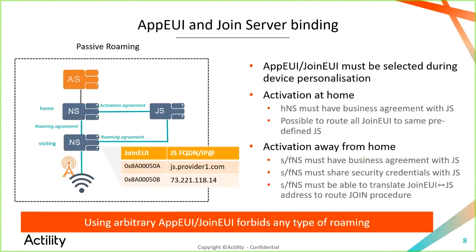The AppEUI and join server binding is absolutely critical when doing activation away from home. Up to now, many devices have been sold and are still being sold with arbitrary JoinEUI values — the 1.0 naming is AppEUI, the 1.1 naming is JoinEUI, but they are used interchangeably here. Because most activation has been done at home, selecting an arbitrary AppEUI has not been a real problem.